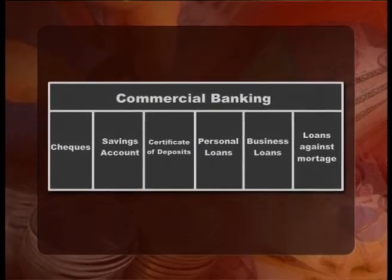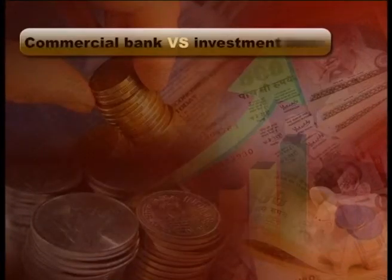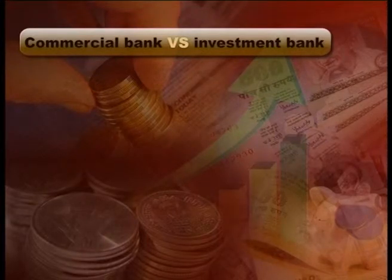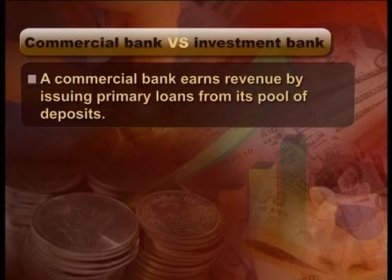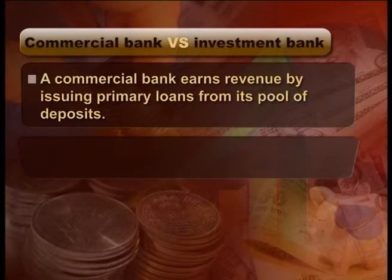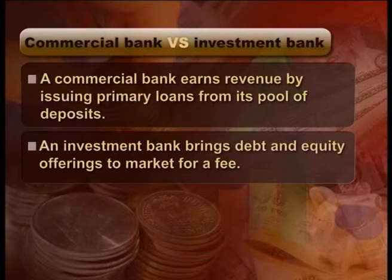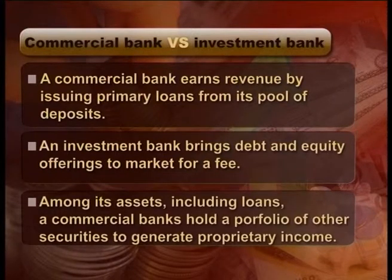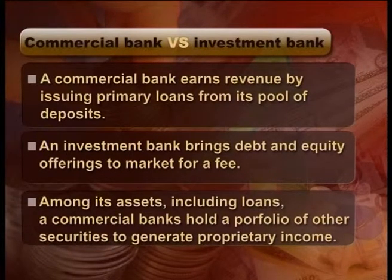The term commercial bank came about as a way to distinguish it from an investment bank. The primary difference between a commercial bank and its counterpart is that a commercial bank earns revenue by issuing primary loans from its pool of deposits, while an investment bank brings debt and equity offerings to market for a fee. Among its assets, including loans, a commercial bank holds a portfolio of other securities to generate proprietary income.